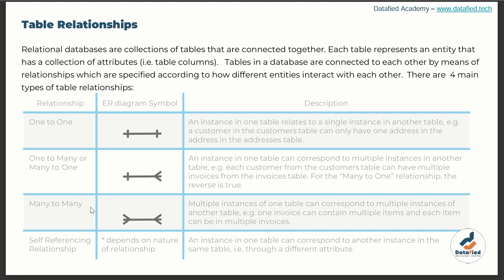The third type of relationship is the many-to-many relationship, represented by its own diagram. This is where multiple instances of one table correspond to multiple instances of another table. For example, one invoice can contain multiple items, and each item can appear in multiple invoices.